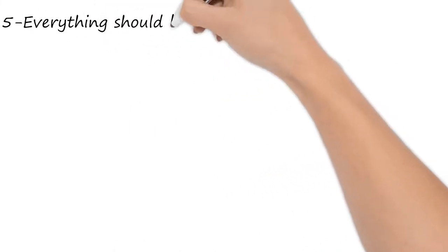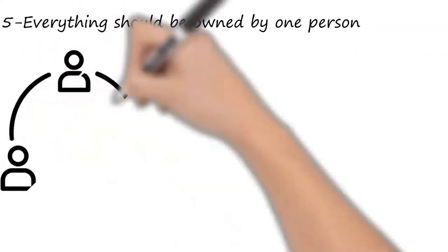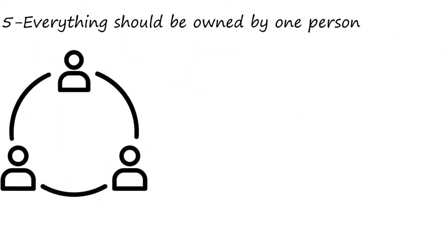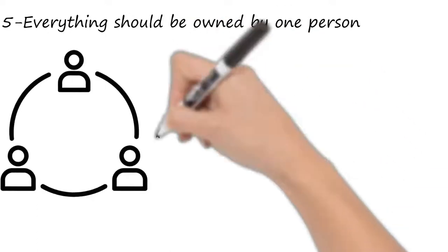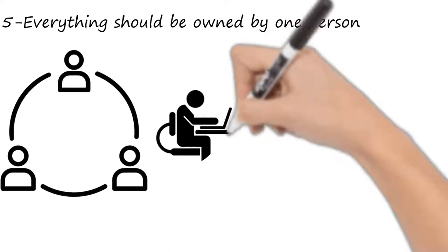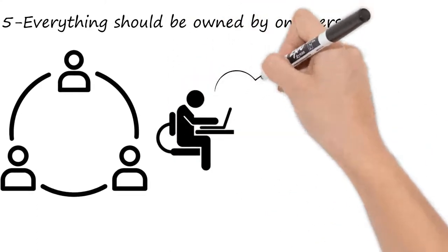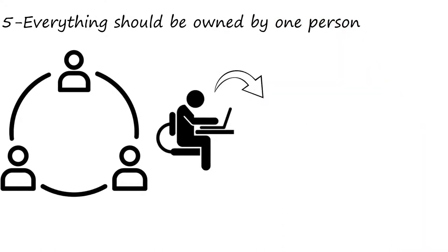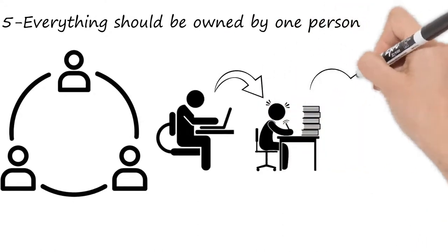Number five is that everything should be owned by one person and every person should own something. Even something really small, like who waters the rubber plant in reception, that should be owned by somebody. So if it isn't done, we know who should have done that. So everything should be owned and not owned by two or three people. Everything should be owned by one person.